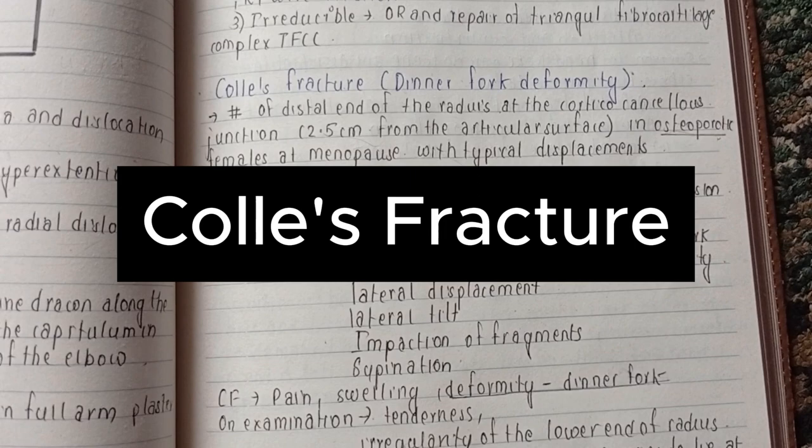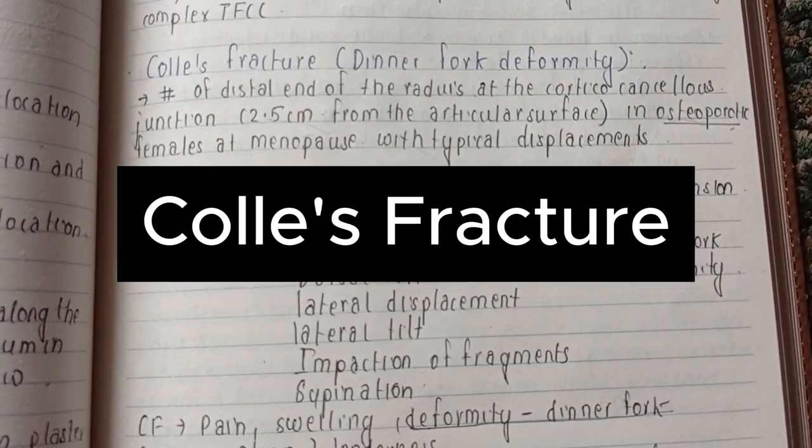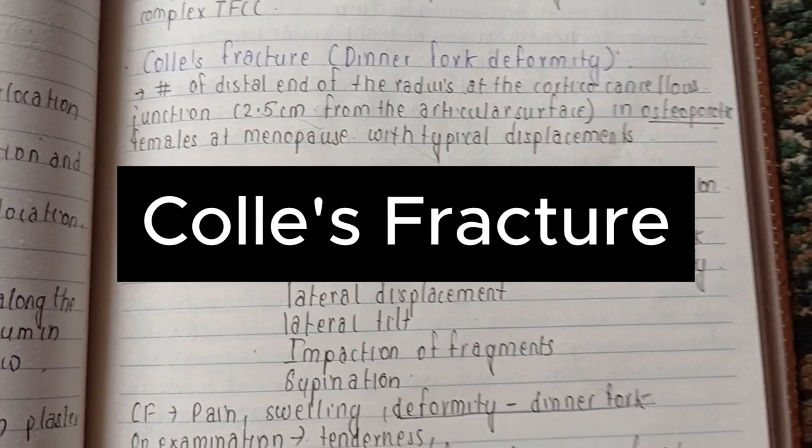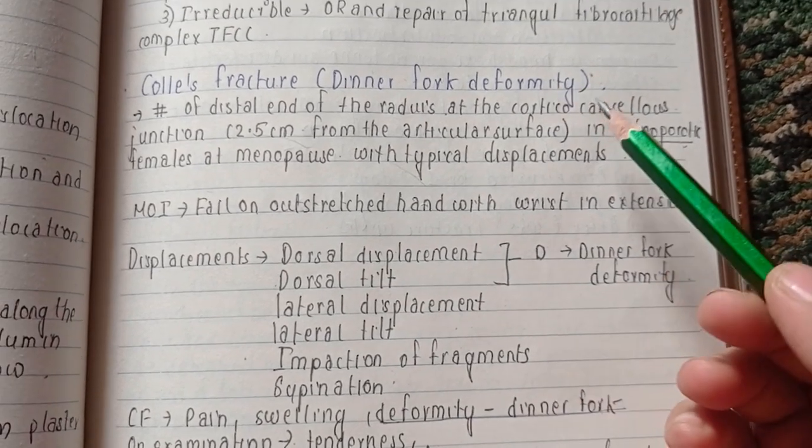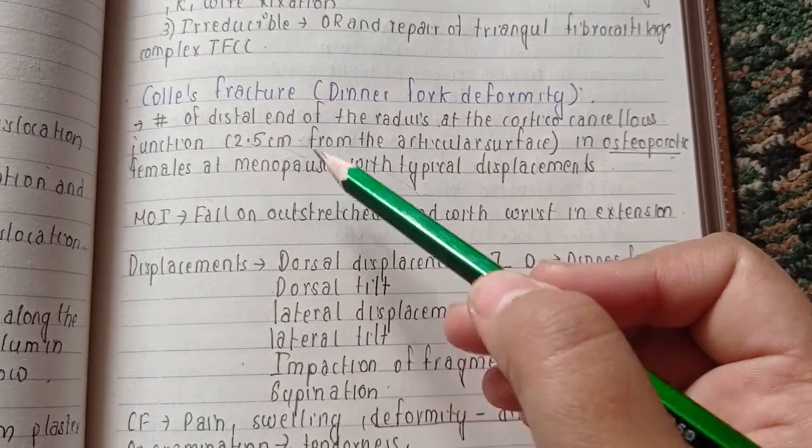Hello everyone, let us discuss Colles' fracture today. It is one of the most important fractures of the forearm - a fracture of the distal end of the radius at the corticocancellous junction.